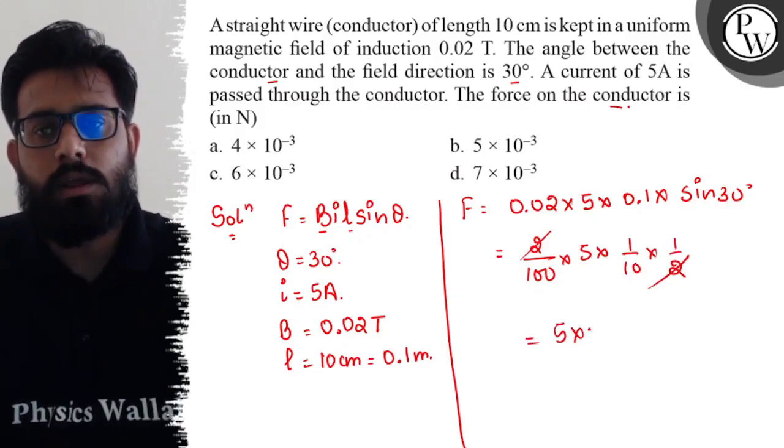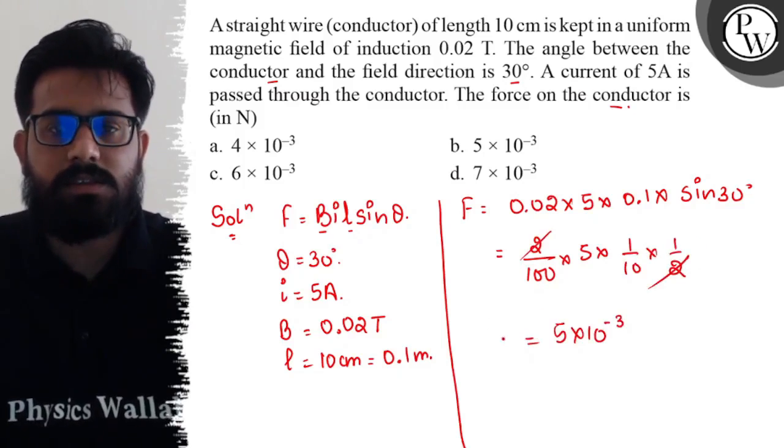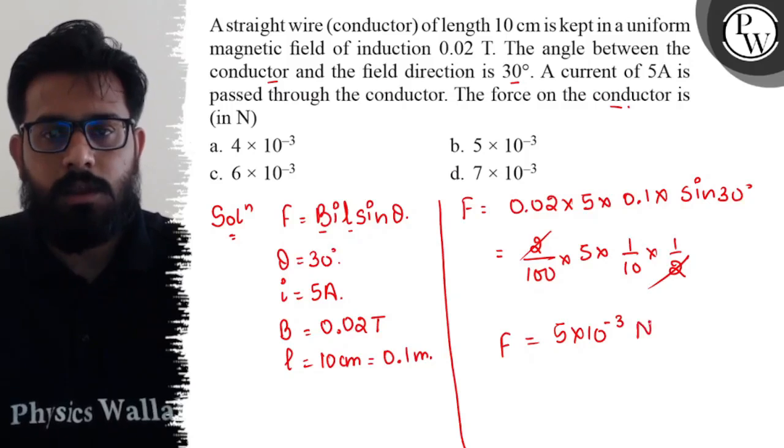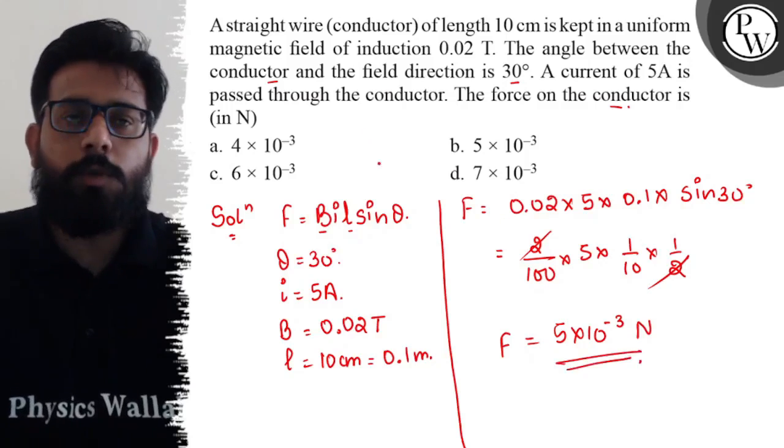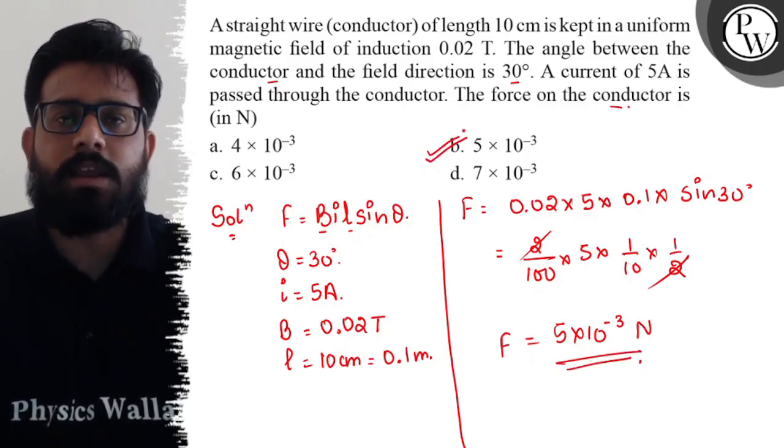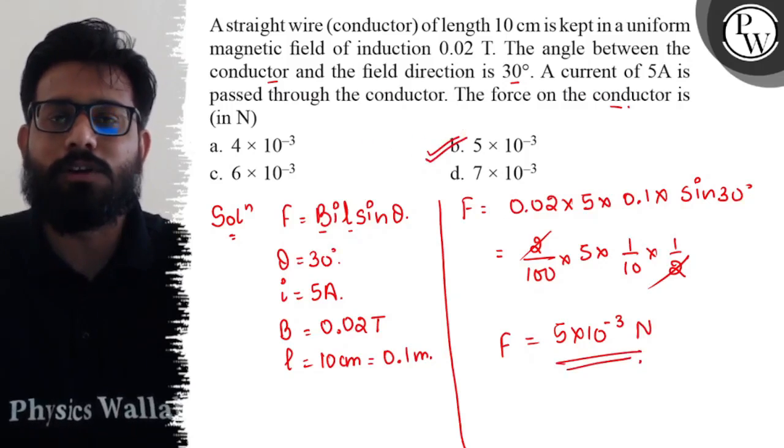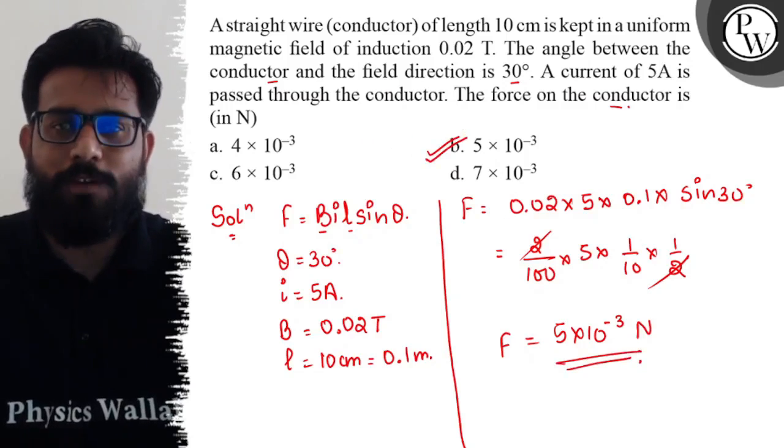And it comes out to be 5 into 10 raised to power minus 3 is the value of force which is in Newtons. So your option 5 into 10 raised to power minus 3 is absolutely correct. And I hope you got the concept of this question. All the very best.